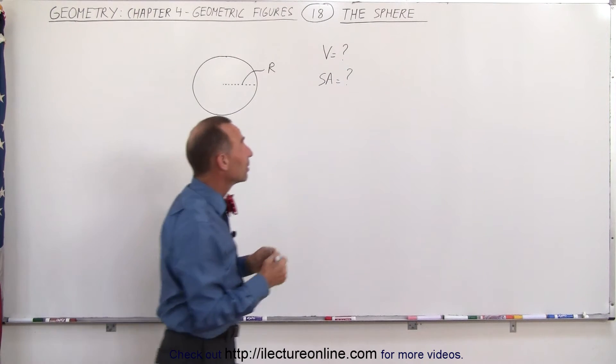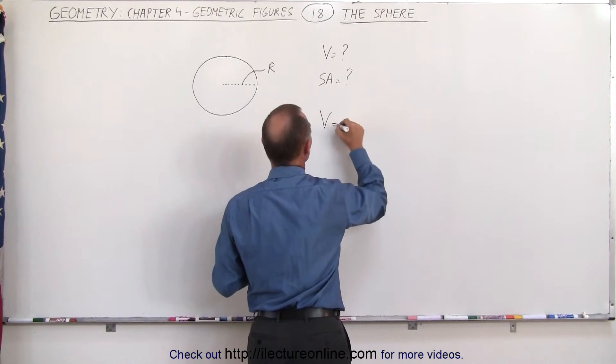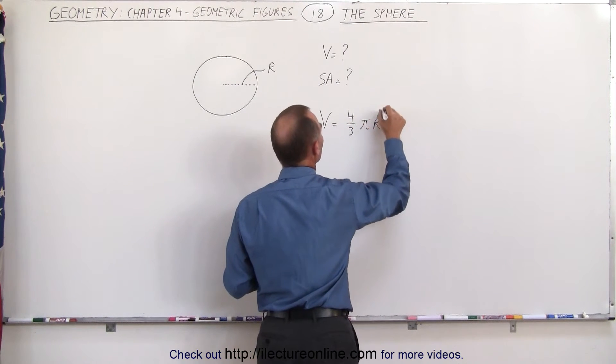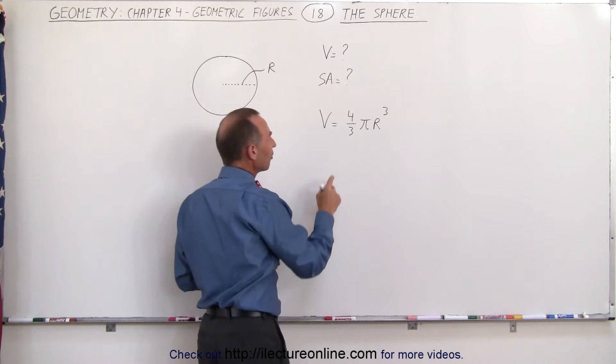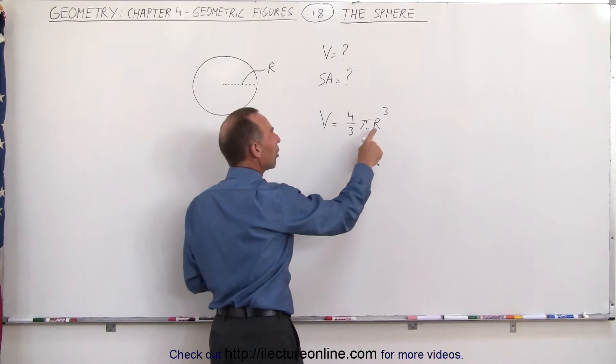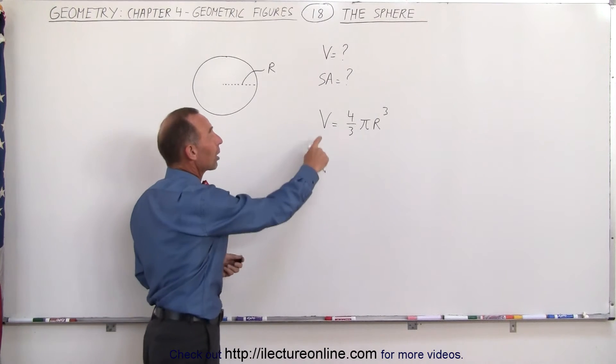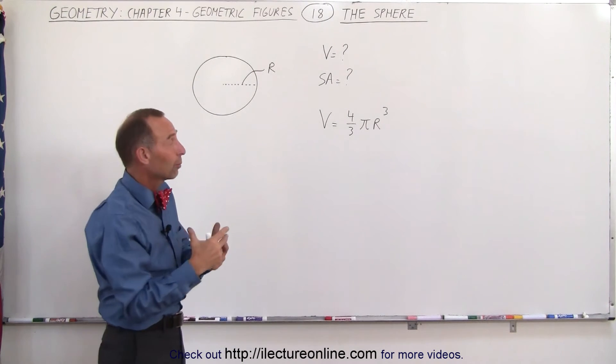But for the volume, it turns out the volume of a sphere is equal to four-thirds pi r cubed. First of all, since it's volume we would expect r raised to the third power. We want to see a cube there because we're talking about the volume and typically volumes are related to cubes.